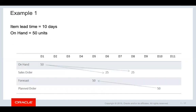Demand prioritization will largely influence demand satisfaction dates for orders within lead time, meaning near-term orders. Orders outside of lead time will always be met on time regardless of demand priorities. In this example, the sales order will be prioritized higher than the forecast as it is within the item's total lead time. If the on-hand is allocated to the forecast on day 5, the sales order will be satisfied late. Therefore, the engine will decide to use the on-hand for the sales order and create a planned order to satisfy the forecast.